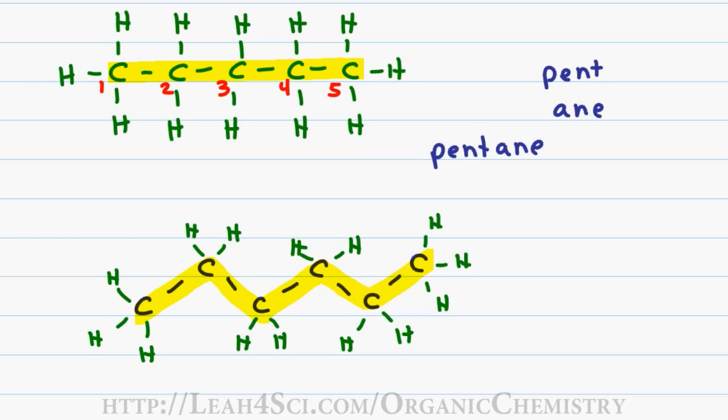Once again, I can number from either direction and now apply the puzzle pieces. For the first name, I have six carbons which gives me a first name of hex. I only have single bonds which gives me ane and that means this molecule is hexane.